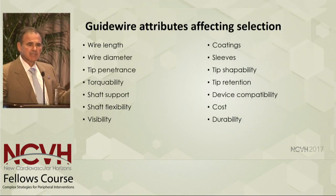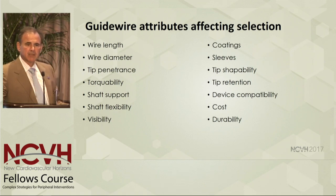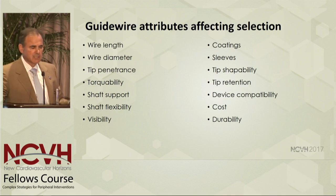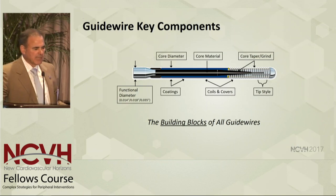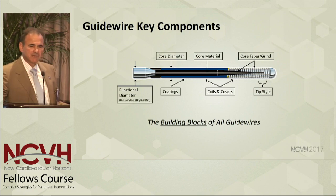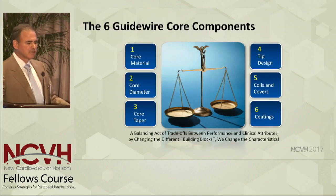There are a lot of attributes that I seek when using a guide wire. All of these play a role when I'm looking for these. But what creates these phenomena? Well, there are key guide wire components: core diameter, core material, core taper grind, tip style, coils and covers, coatings, and functional diameters.